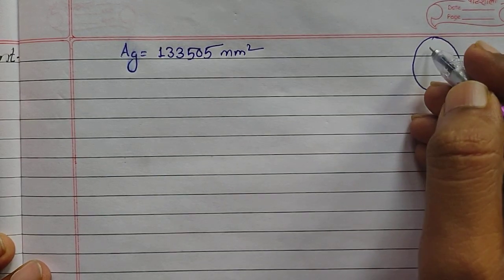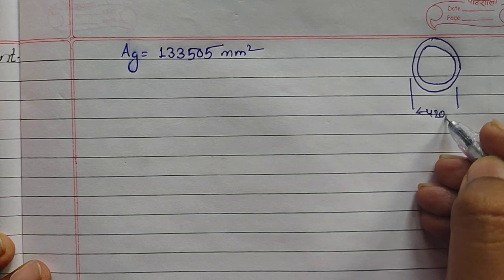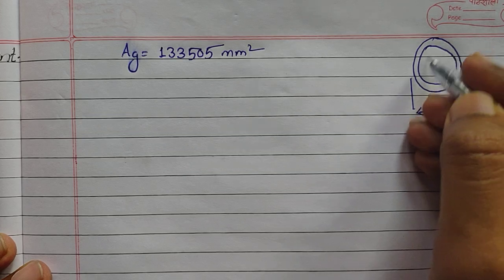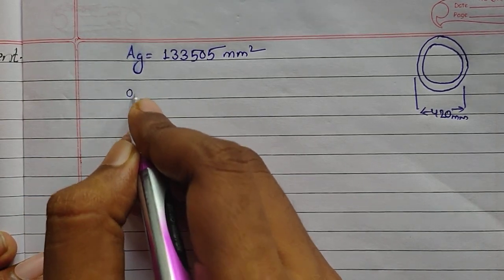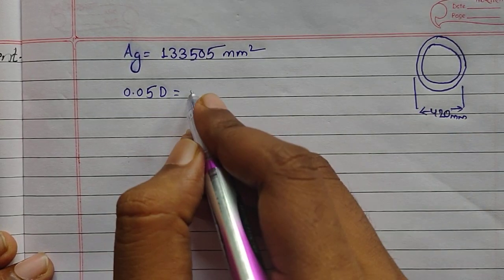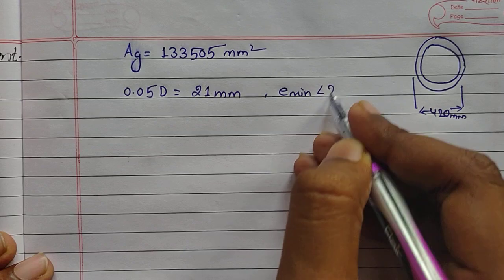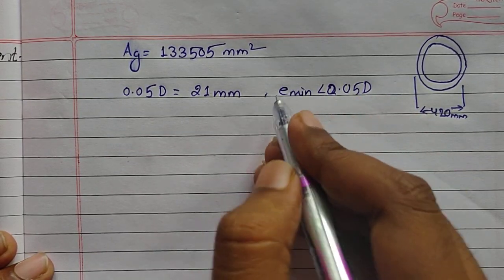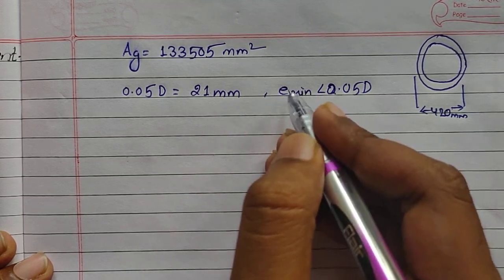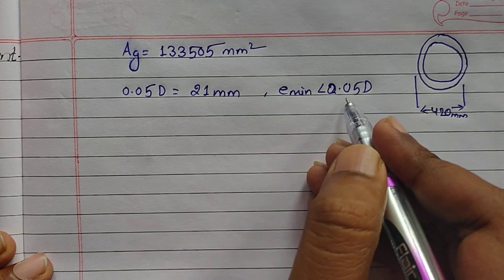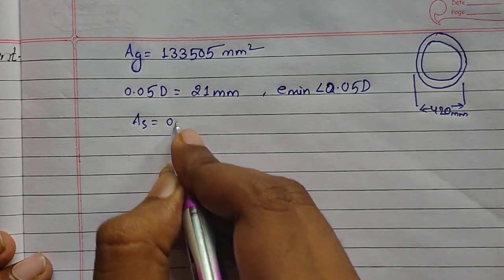Now let's draw a rough sketch. This is our circular column with outer diameter 420 mm. The outer spiral is the helix, and the inner portion is called the core. We now apply a check: 0.05 × D = 0.05 × 420 = 21 mm. Our minimum eccentricity is 20 mm, which is less than 21 mm. Hence our assumption e_min ≤ 0.05D is confirmed correct.